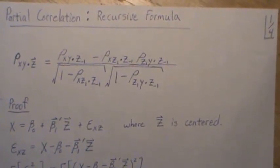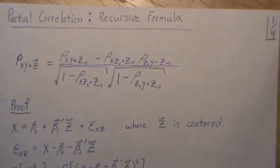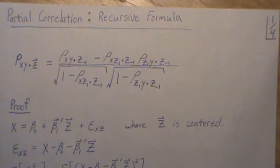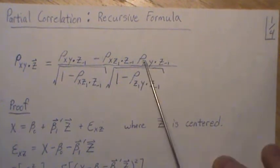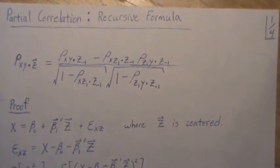And then we do the same thing with y. We regress y onto z, take the residuals, and then we use the residuals, which is essentially y with z removed, take the correlation between them. But this is a recursive formula for this partial correlation.